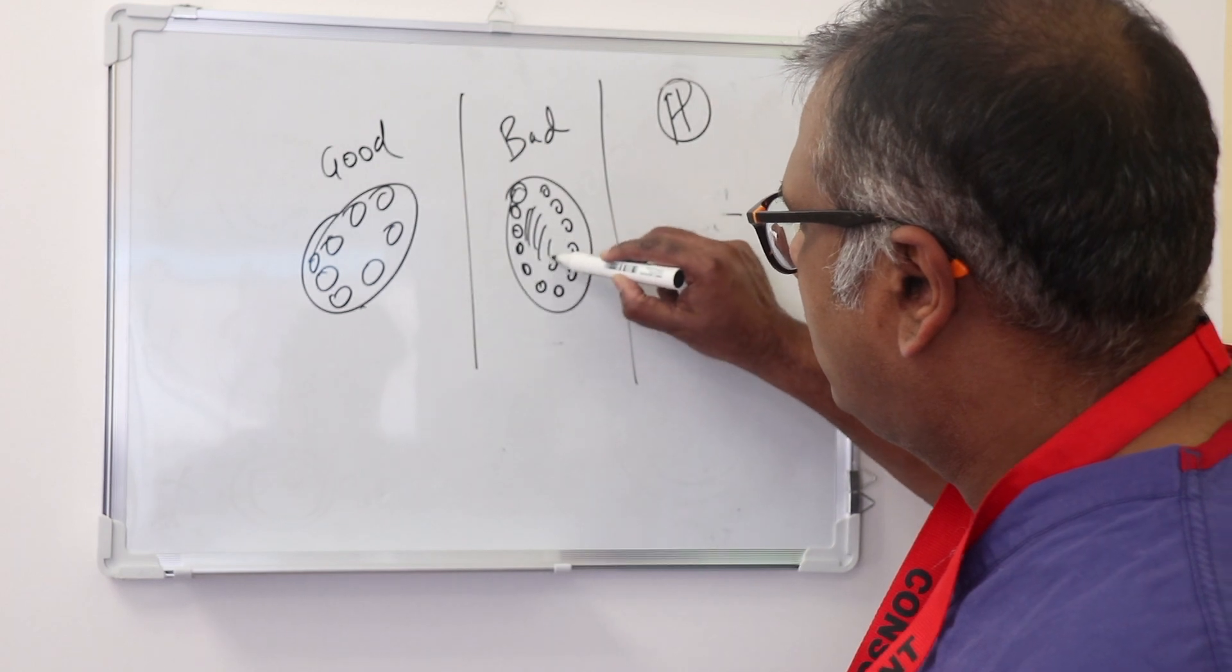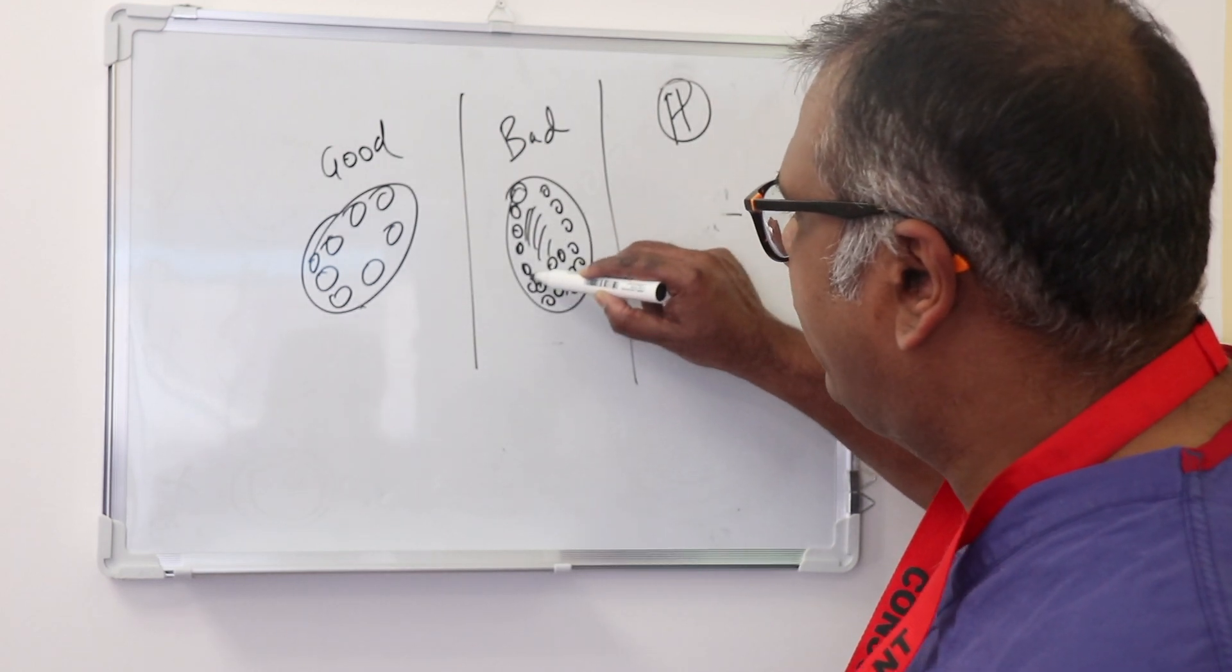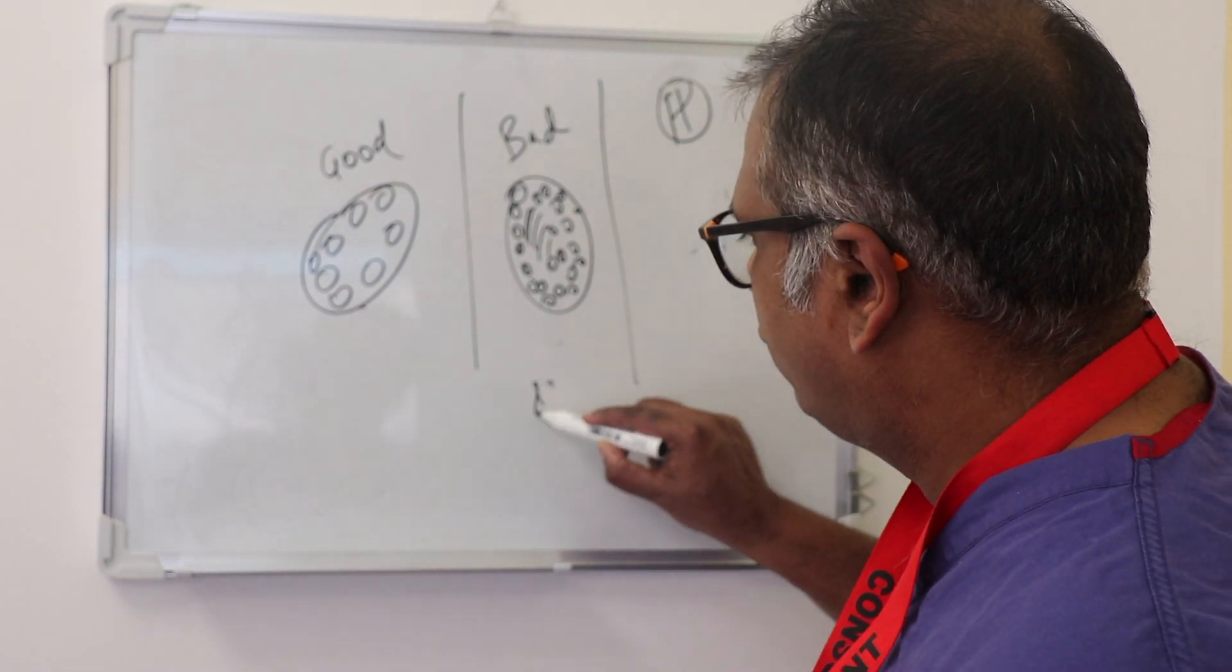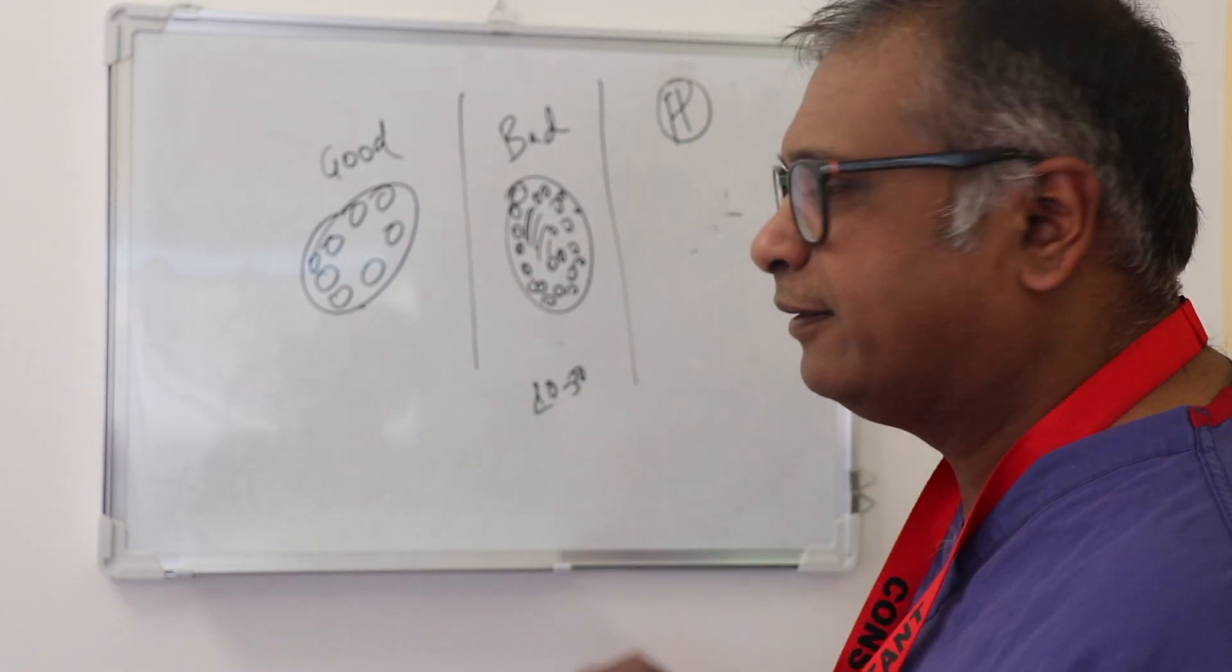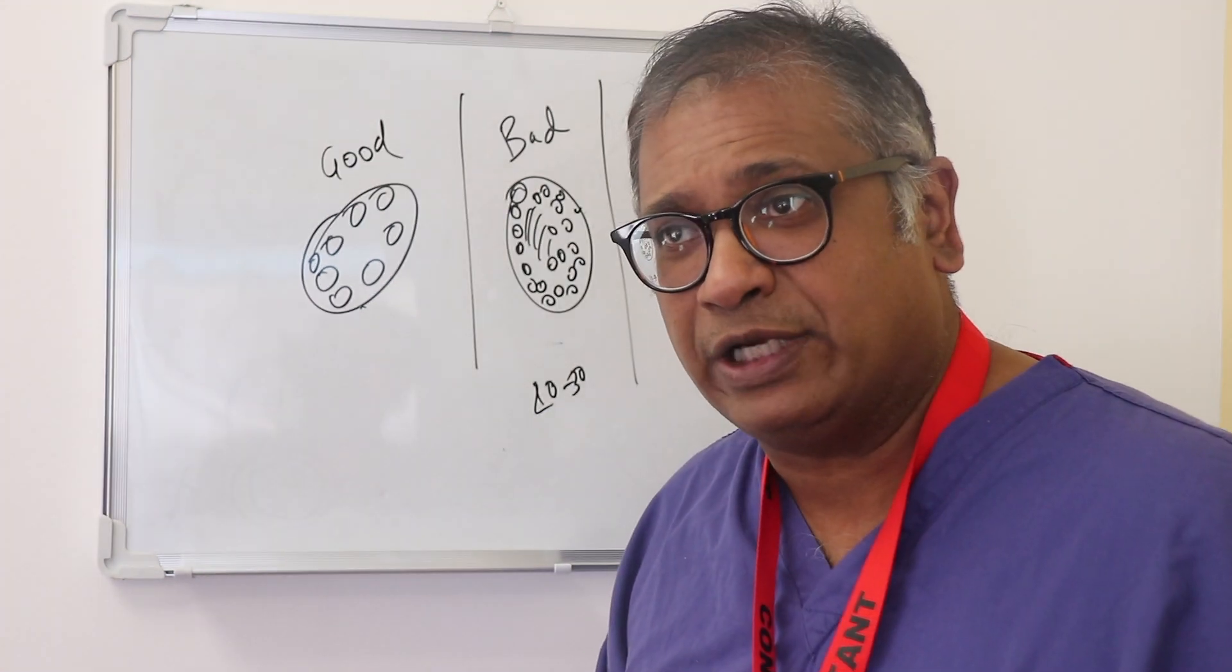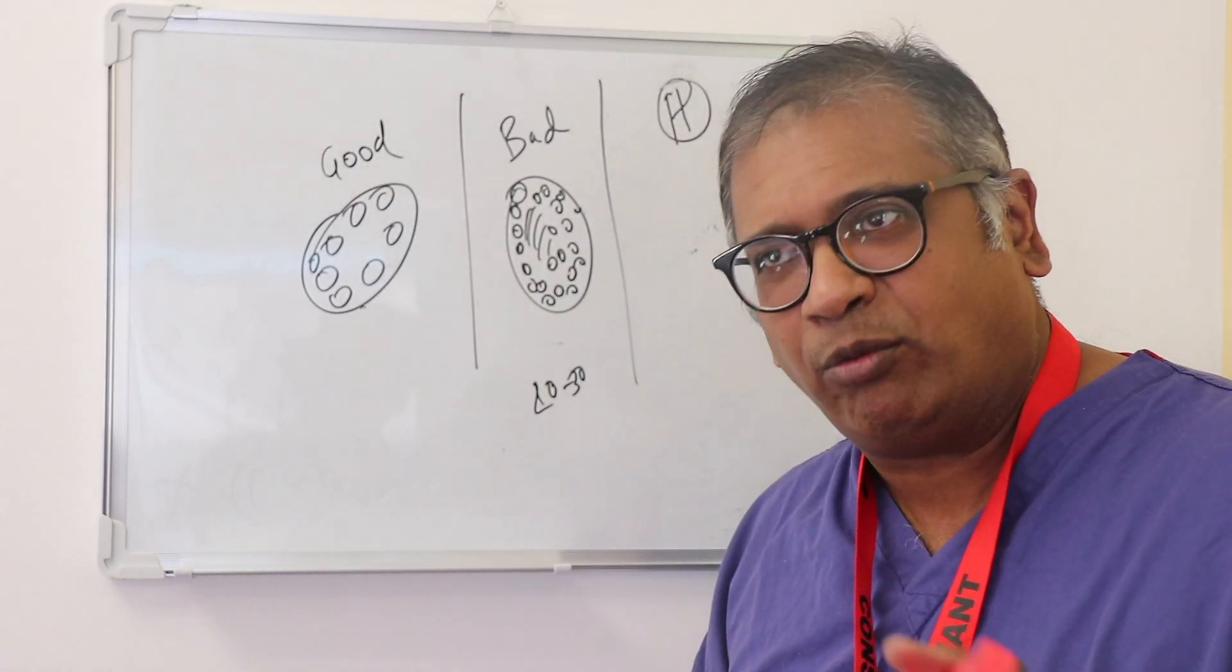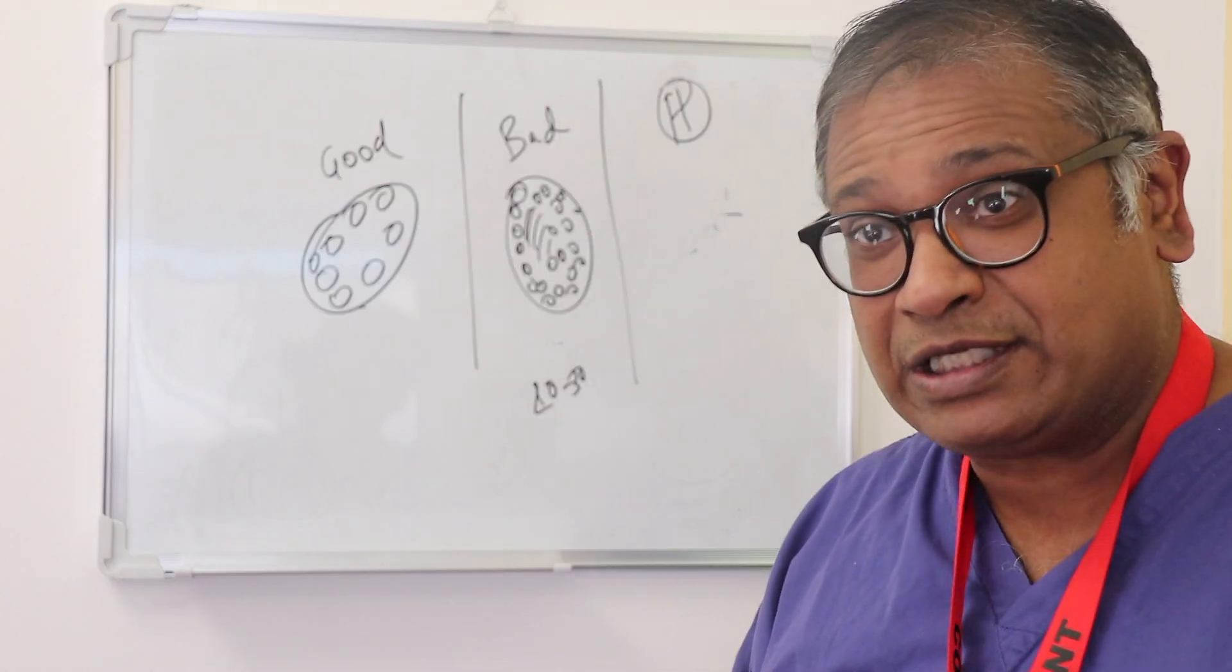Your bad PCOS have very small follicles—between 2 and 5mm, but it's variable. You see antral follicle counts of 20 to 30 in each ovary. Logically, these ovaries cannot be similar to those with 15 follicles.